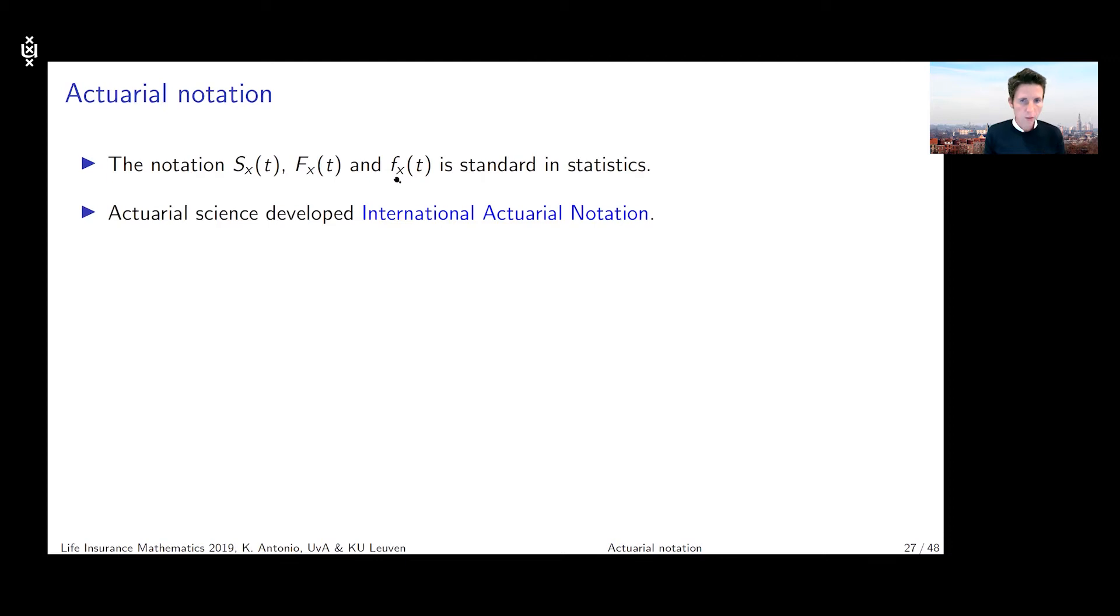If we look at the actuarial notation, we're going to call that international actuarial notation and for the survival and the death probabilities, we're going to use the notation _tP_x which is the same or which refers to the same probability as the survival function of the x-year-old evaluated in t.